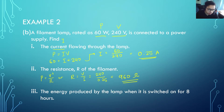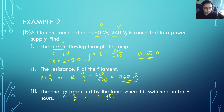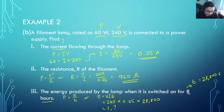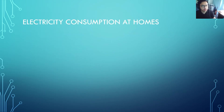Example 3c: Find the energy produced by the lamp when switched on for 8 hours. Using E equals VIT, voltage is 240, current is 0.25, and time is 8 hours which must be converted to seconds: 8 hours equals 28,800 seconds. Calculating gives 1,728,000 joules.